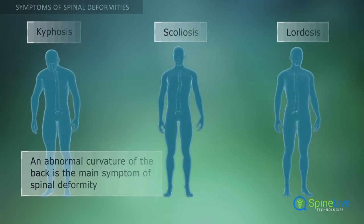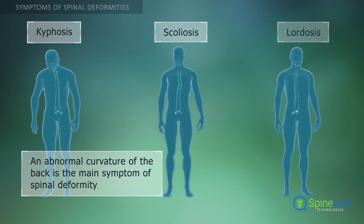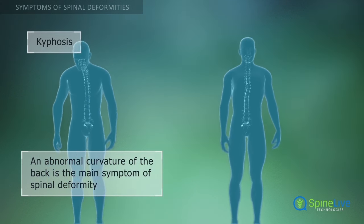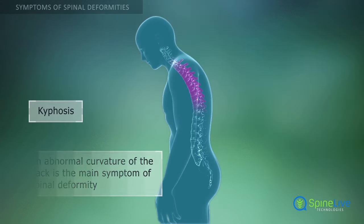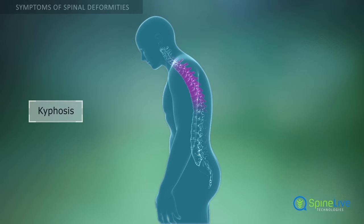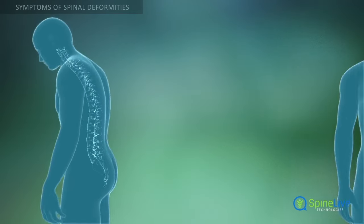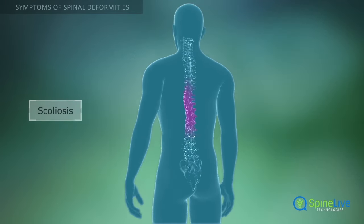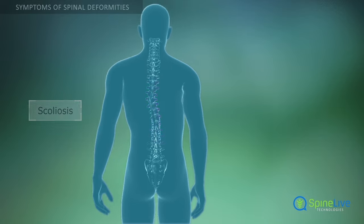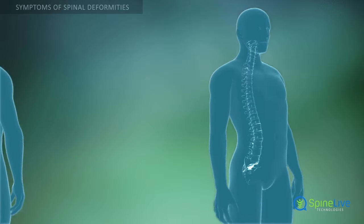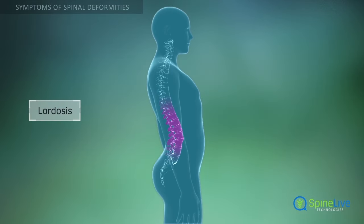The main symptom of a spinal deformity is an abnormal curvature of the back. In kyphosis, the upper back is abnormally rounded. In scoliosis, the spine is curved to either side. An exaggerated inward curve of the low back is known as lumbar lordosis.